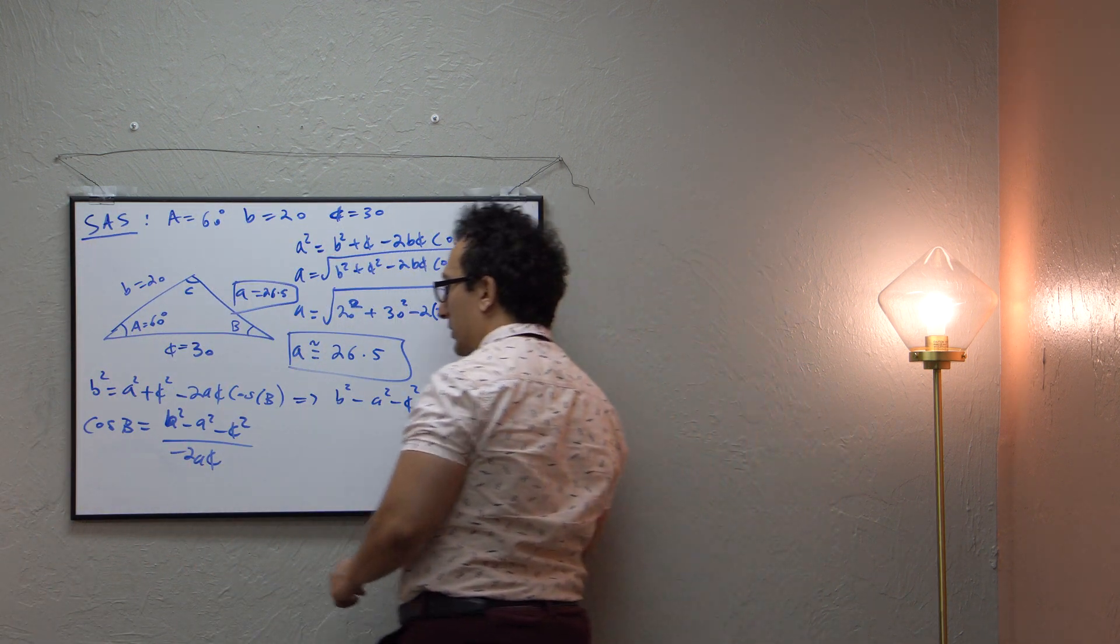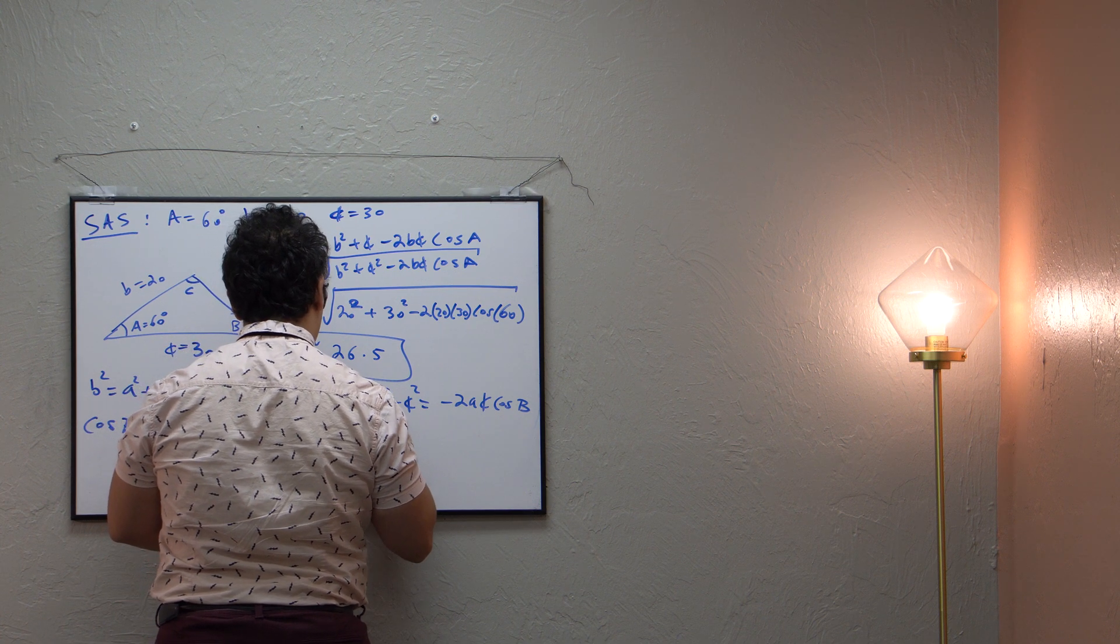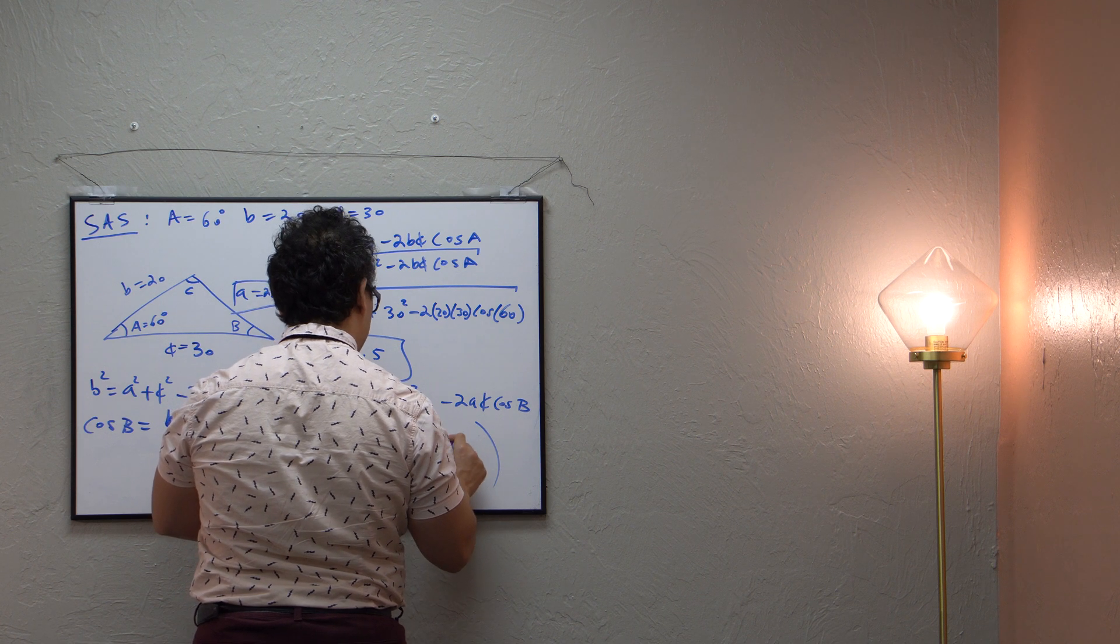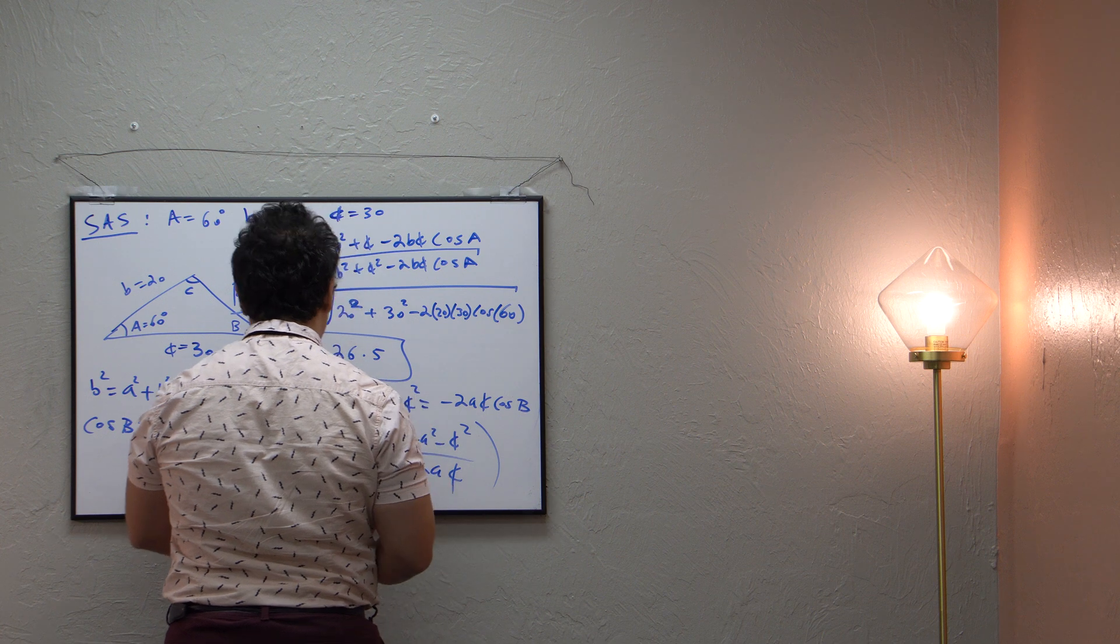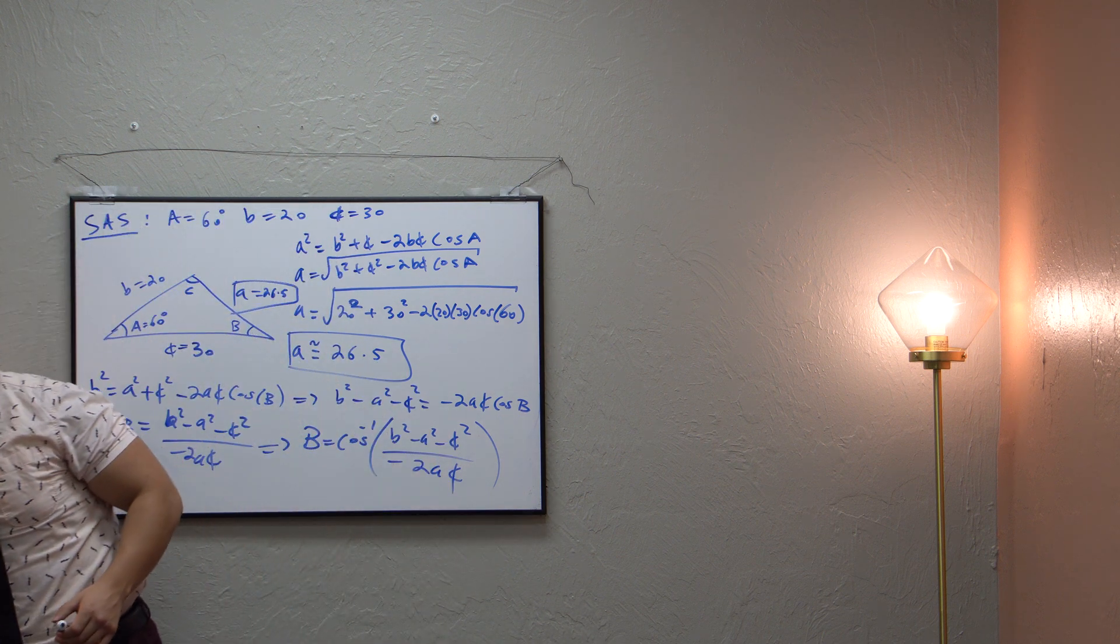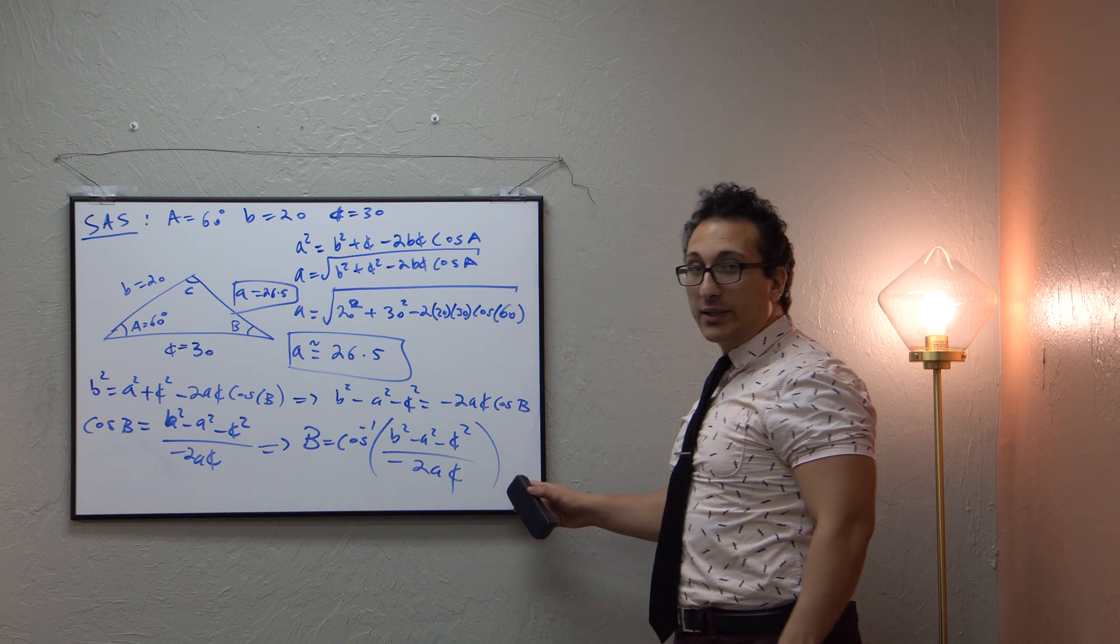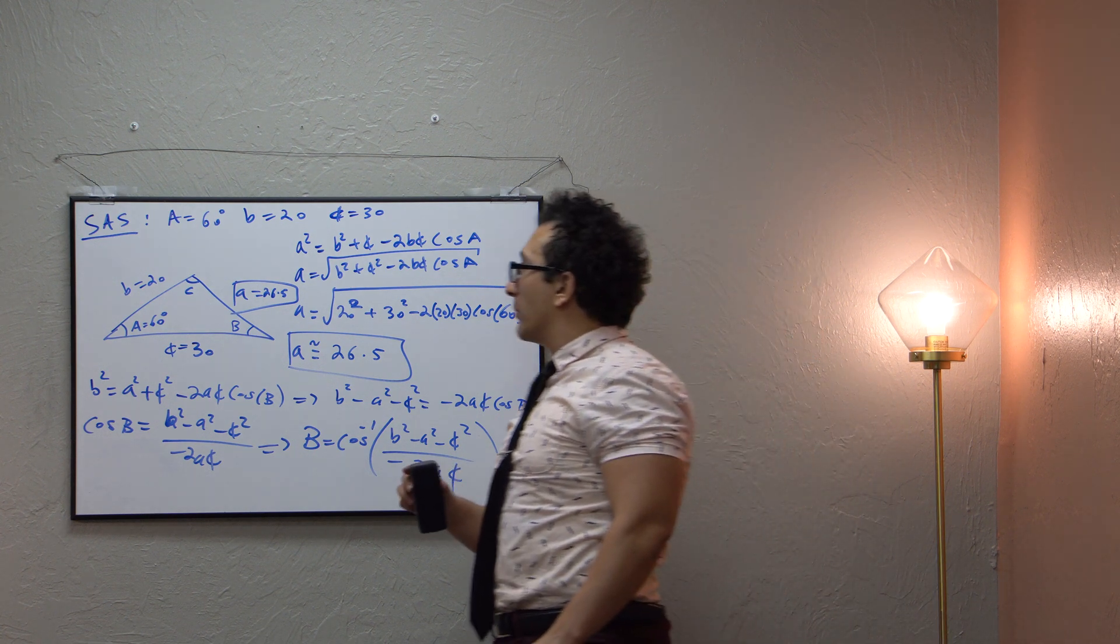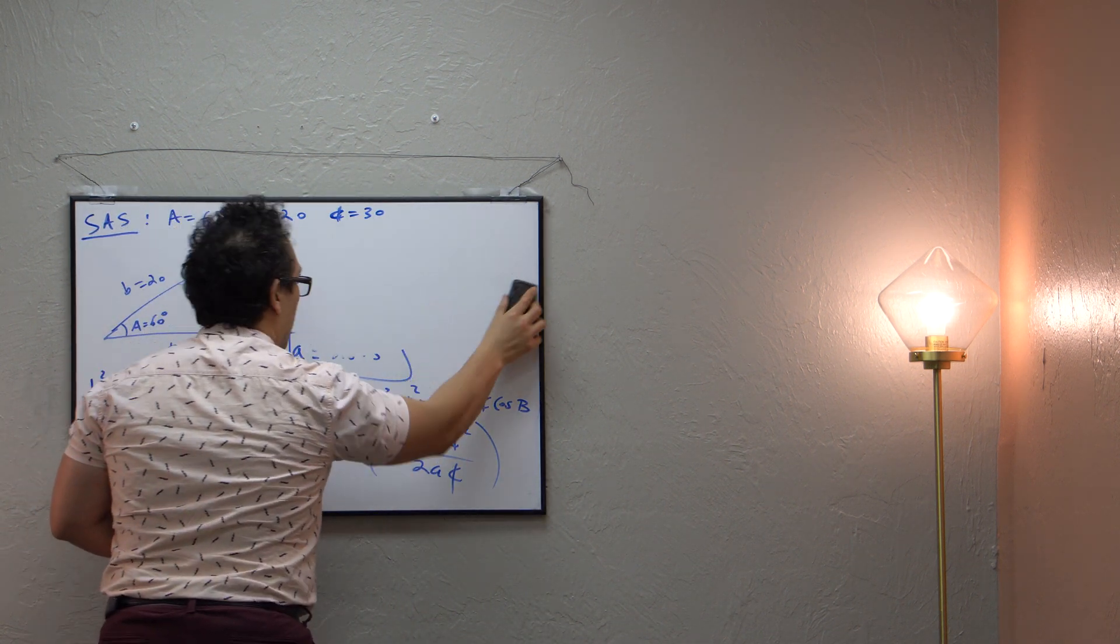And then when I take the cosine inverse, I solve for b. I get b is equal to the cosine inverse of that stuff. I get b squared minus a squared minus little c squared, all over negative 2ac. That is what my angle B is. So I'll give you some time to check this out. You can pause the video and see the steps. I'll be moving on. So bam, erase some work here.